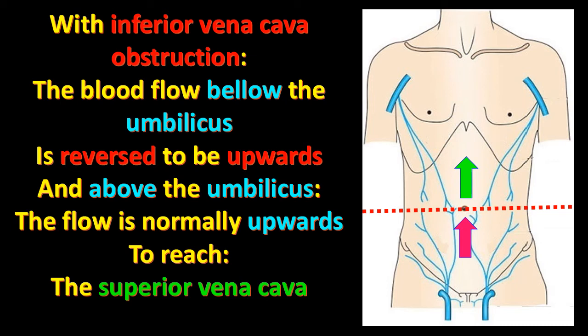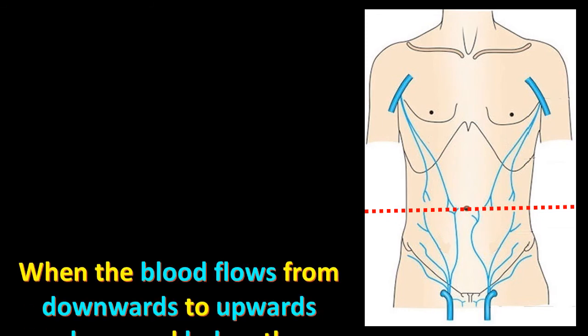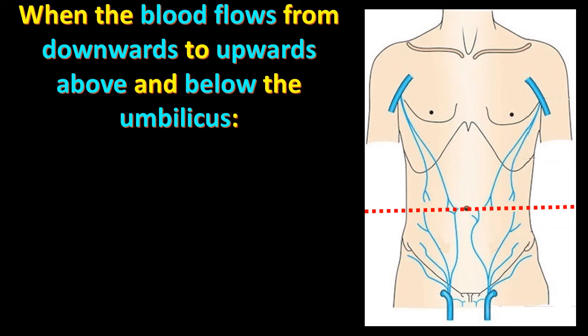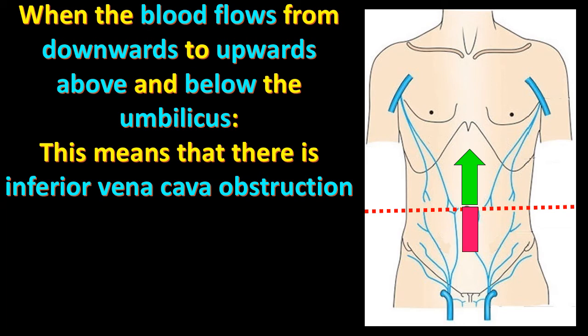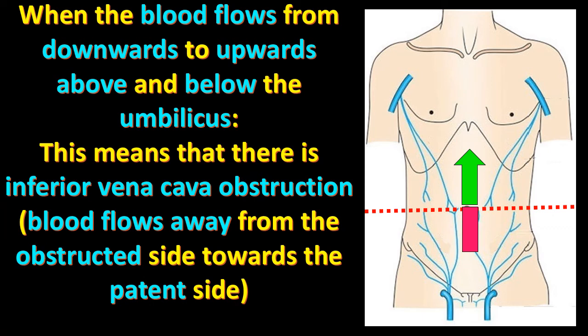In patients with inferior vena cava obstruction, the blood is drained both below the umbilicus and above the umbilicus from down upward, to be drained finally into the superior vena cava. When blood flows from downward to upward both above and below the umbilicus — the flow above the umbilicus is normal direction (green), while the flow below the umbilicus is reversed direction — this means there is inferior vena cava obstruction. The blood flows away from the obstructed site toward the patent site.